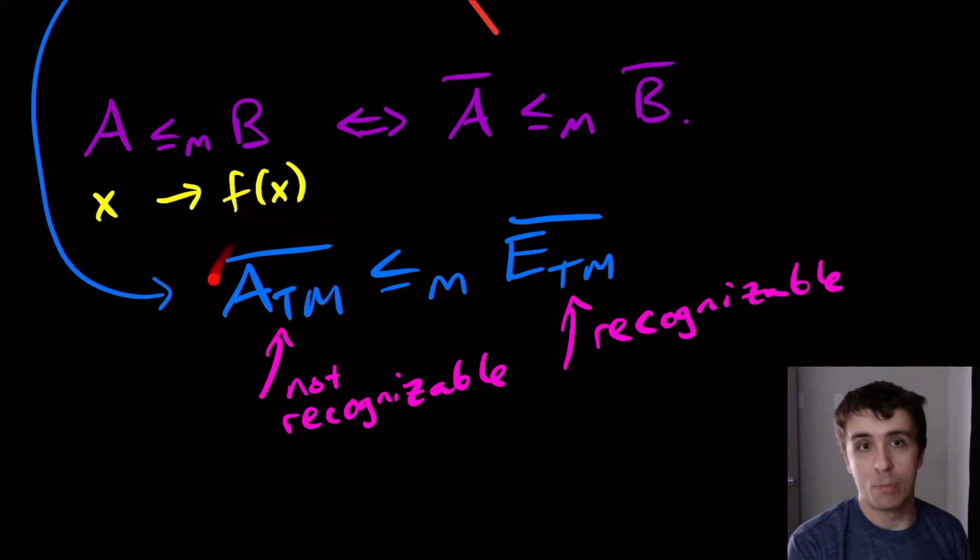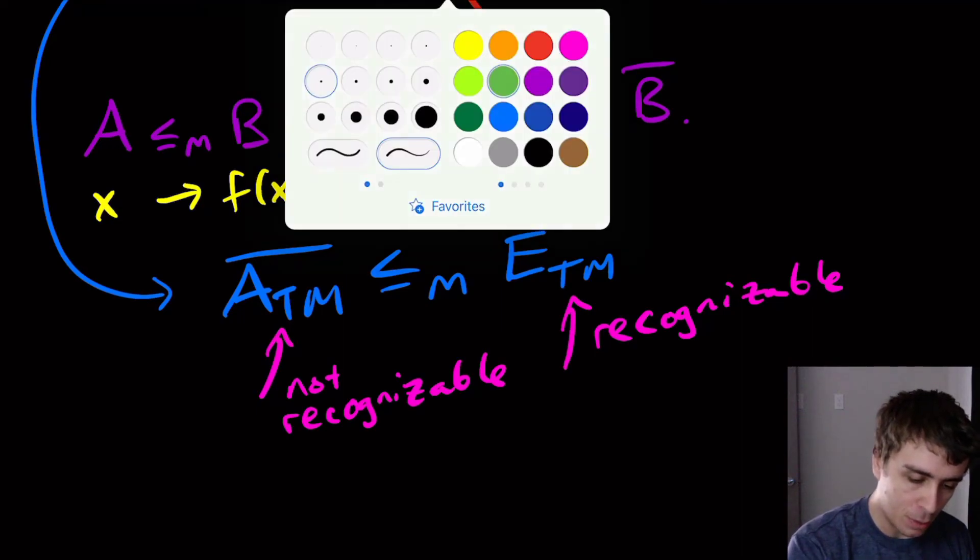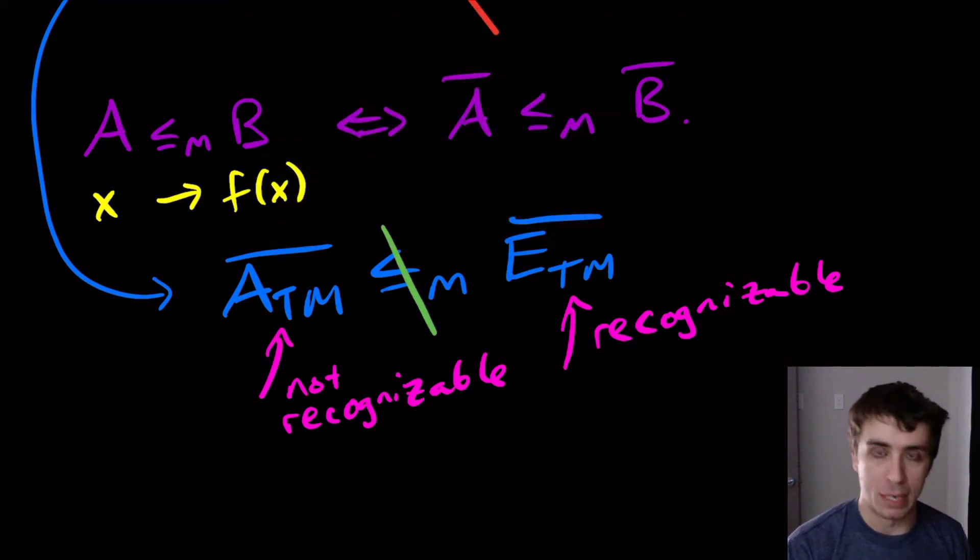And we don't have one because we proved it for ATM complement. Why is this impossible to occur? There's no mapping reduction like this.